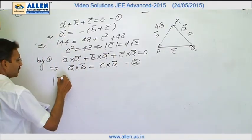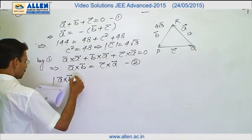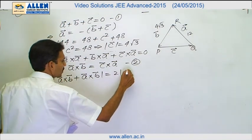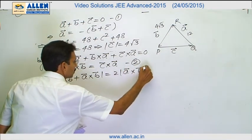It makes it a cross b plus c cross a which is a cross b plus a cross b. So it is twice a cross b.